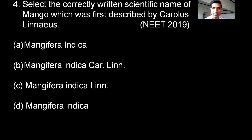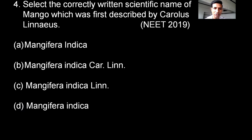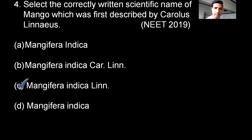Select the correctly written scientific name of mango, which was first described by Carolus Linnaeus. According to the rules of binomial nomenclature, the genus should start with a capital letter and the species with a small letter. The scientist's name can be abbreviated as L. The correct option is C — Mangifera indica L.